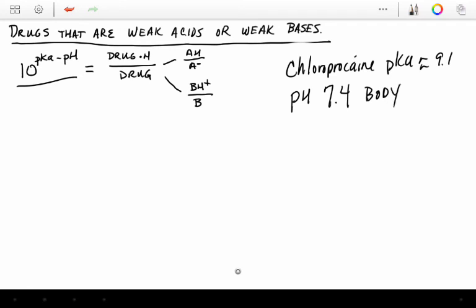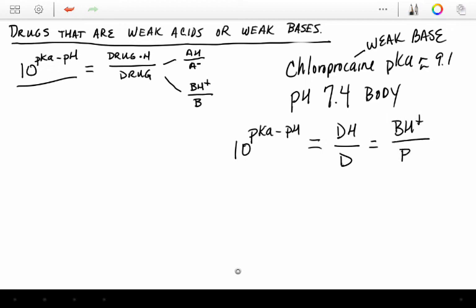So this is a weak base. So the derivation of Henderson-Hasselbalch says that 10 to the pKa minus the pH power is going to equal the ratio of drug bound to hydrogen over the ratio of drug that is not bound to hydrogen. And since this is a weak base, the drug bound to hydrogen will actually be charged, and the drug that is not bound to hydrogen will not be charged.